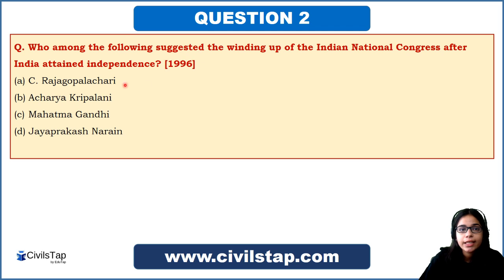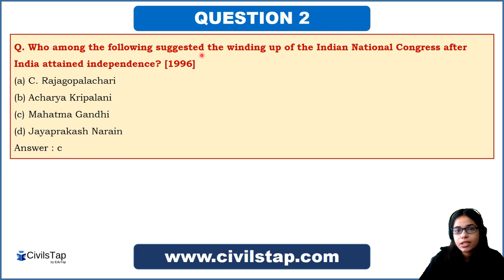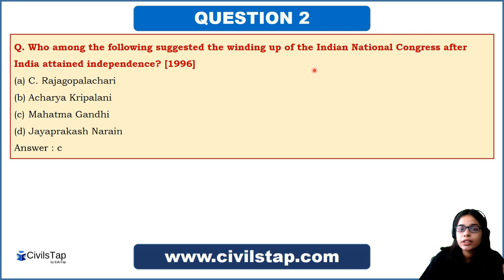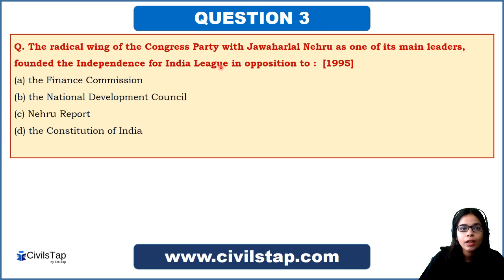This question came in the prelims of 1996. It was asked: who suggested that the Indian National Congress should be wound up after India attained independence? The reasoning was that since the Congress's aim was achieving independence, once independence was achieved, the organization had no further use. Members who wished to serve India could do so on a voluntary basis. The answer is Mahatma Gandhi, who suggested this.